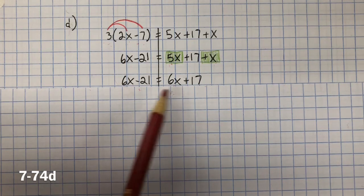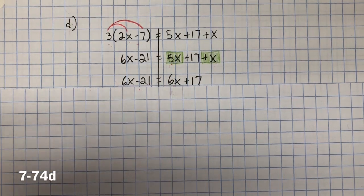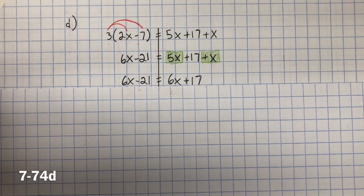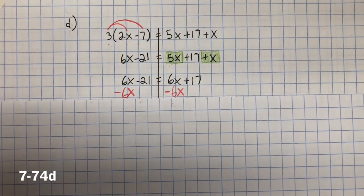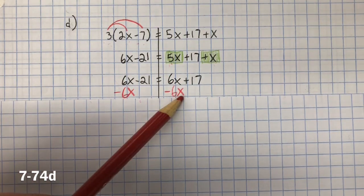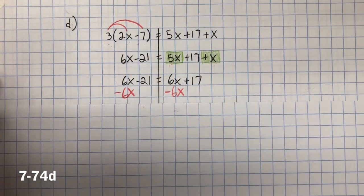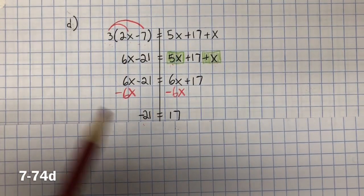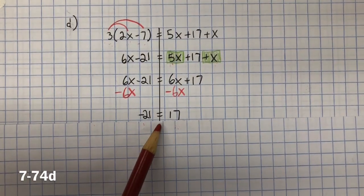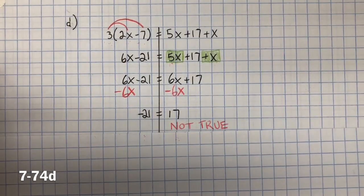Now we need to get the variables on one side of the equation. Inverse property of addition is subtraction. So we're going to subtract 6x from both sides. As you can see, this is a zero pair, and this is a zero pair. So the x's are eliminated on both sides of the equation. Now we have negative 21 equals 17. Well, that's not a true statement. And if you get a not true statement, then there's no solution.